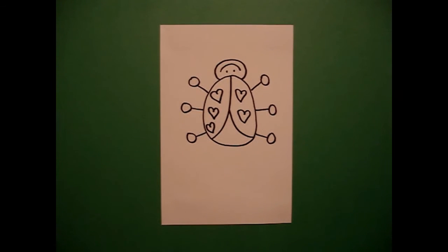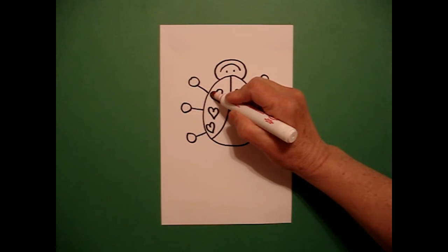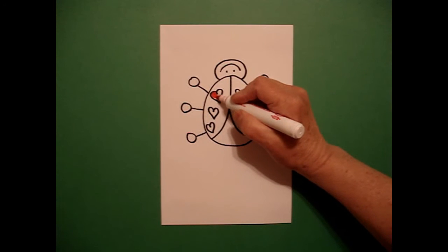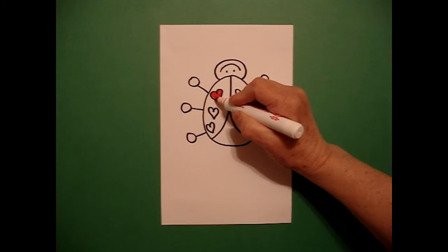Now let's see how we are going to color this. You only need two colors to color. So I'm going to use a red marker and I'm going to color in my little hearts with red so they kind of pop.